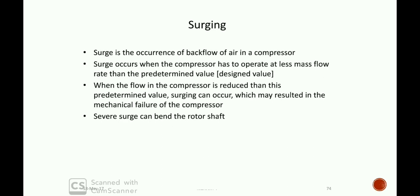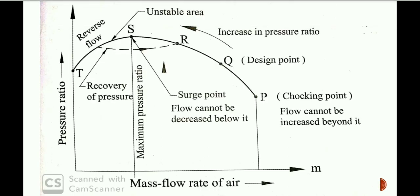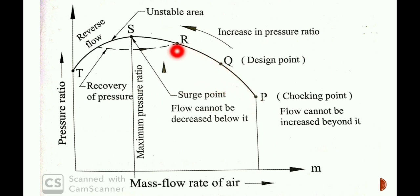We can use the characteristic curve of the compressor. The compressor operates at constant speed. The typical characteristic curve plots mass flow rate versus pressure ratio.